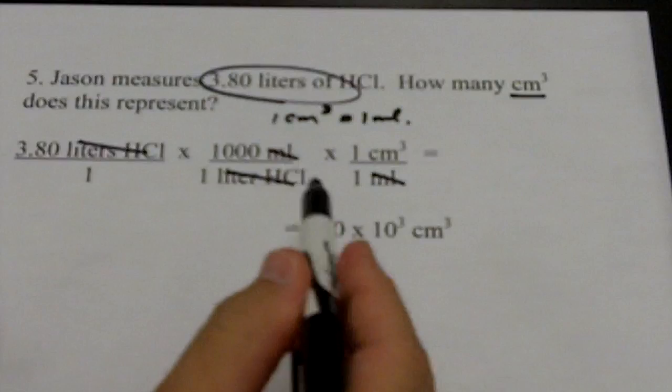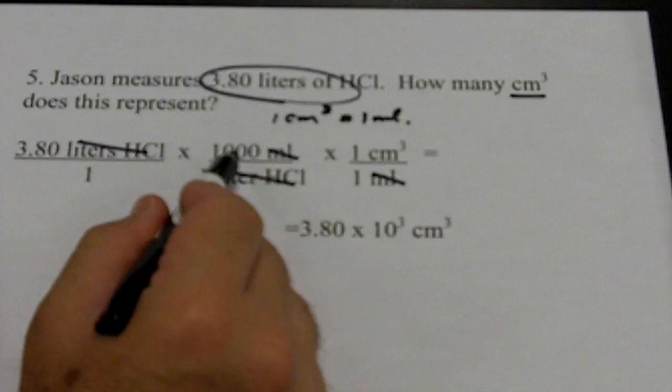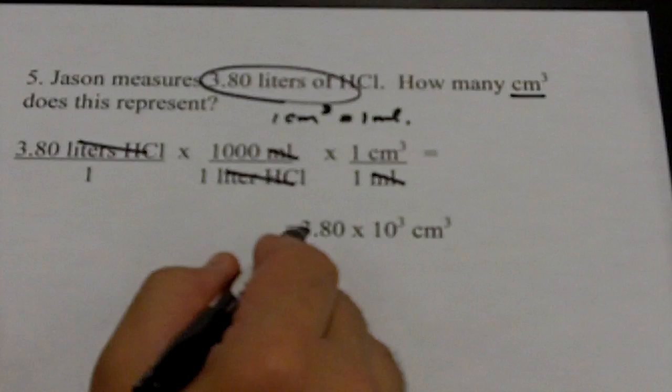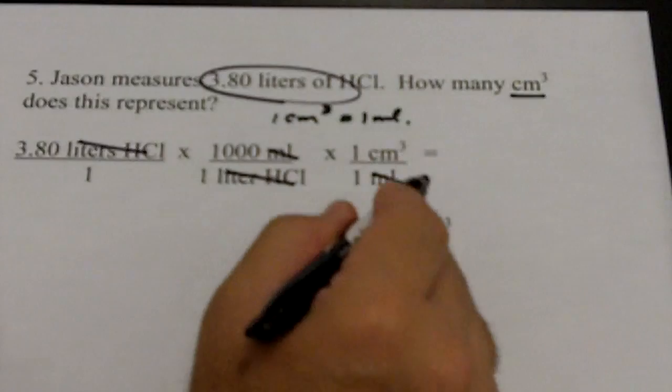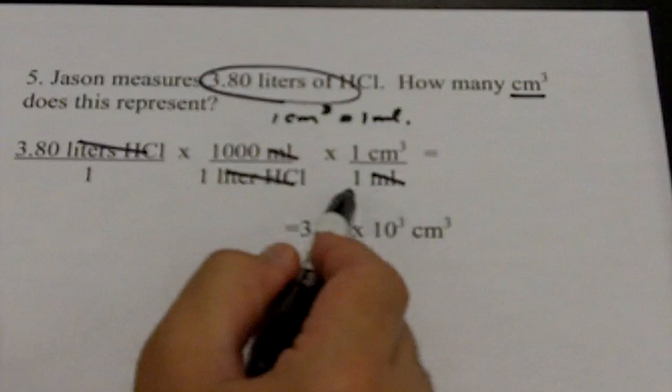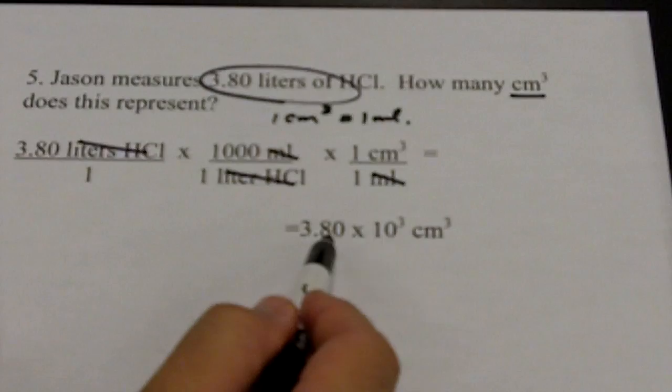Take the calculator out. I have 3.80 times 1000 — both on top, so I multiply. No need for a calculator: 1000 is the same as 10³. My answer is 3.80 times 10³ cubic centimeters. Do I take that zero off? No. I have three significant digits in 3.80, and the conversion values have infinite significant digits. I keep that zero: 3.80 times 10³ cubic centimeters is my final answer.